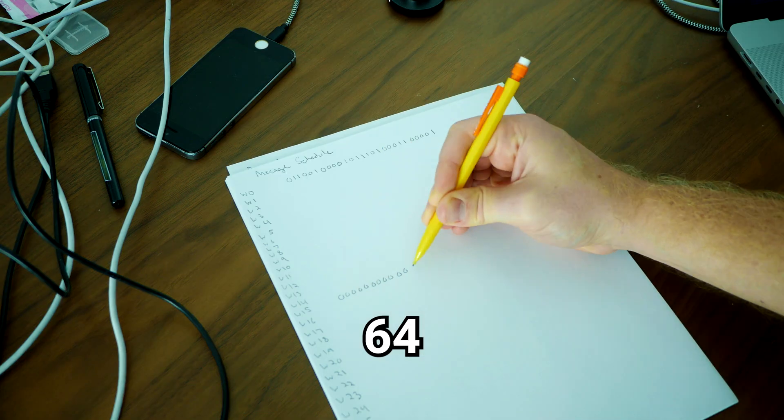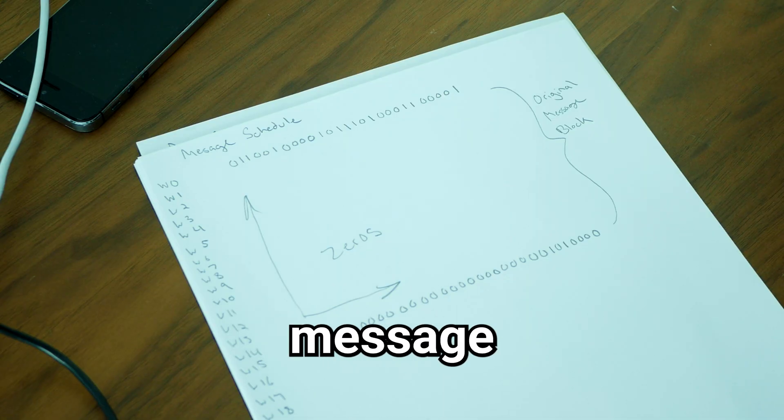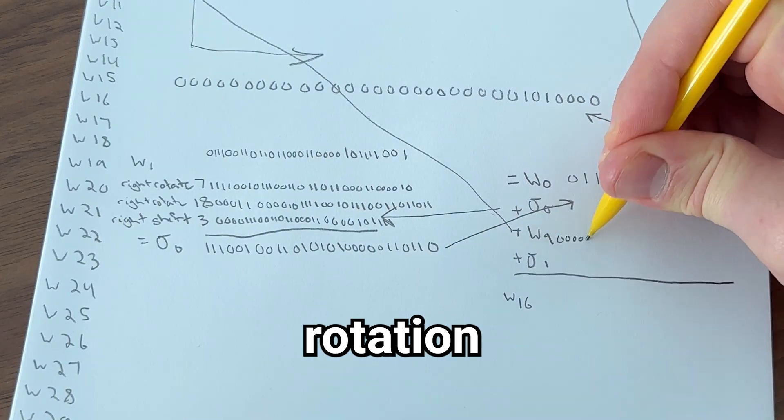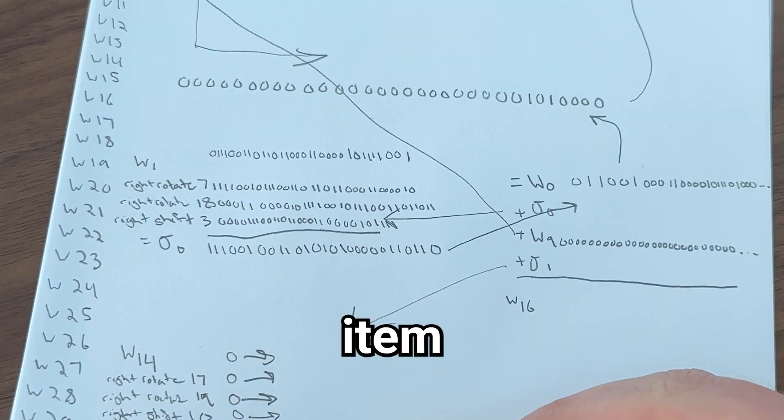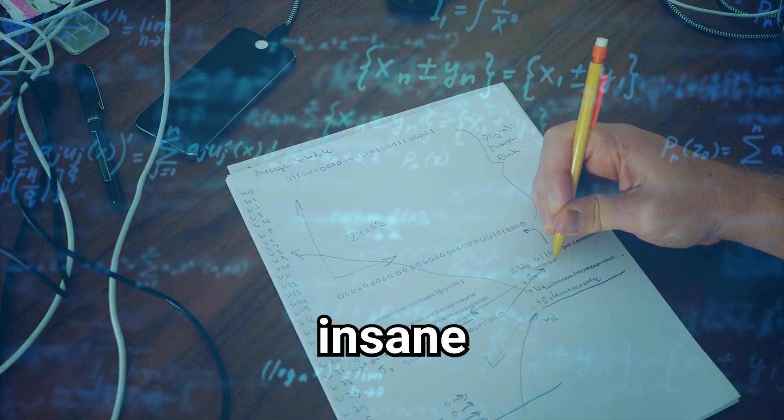Then you create an array that is 64 items long, where each item is 32 bits, called a message schedule. Next we iterate through a rotation function starting at the 16th item going until the last item in the array. This function is literally insane.